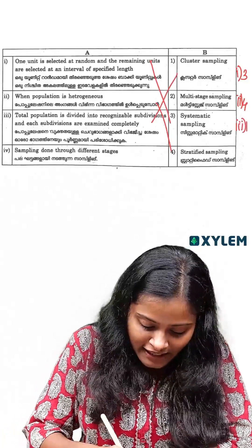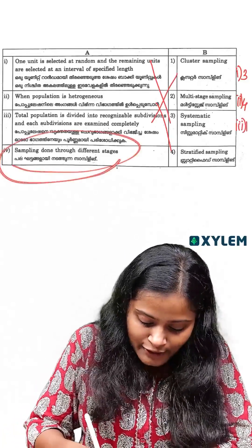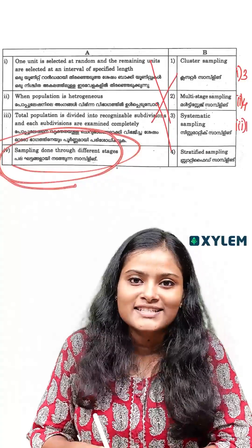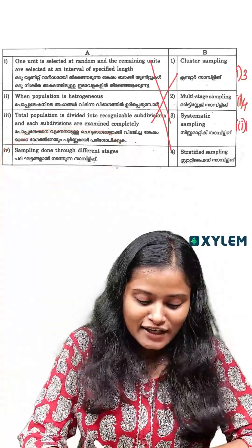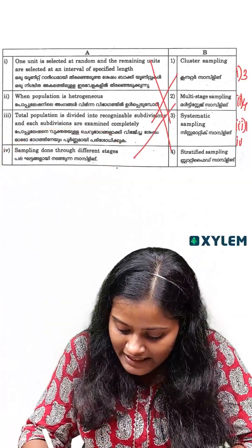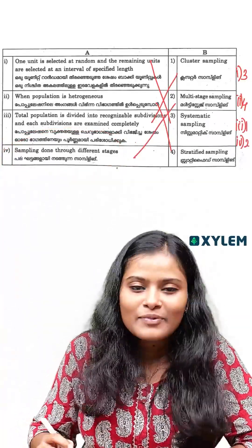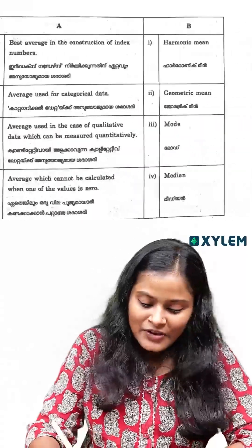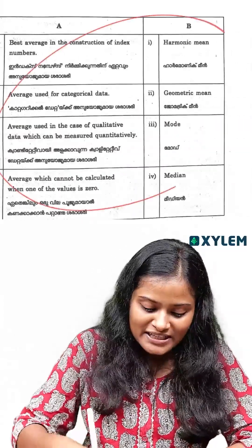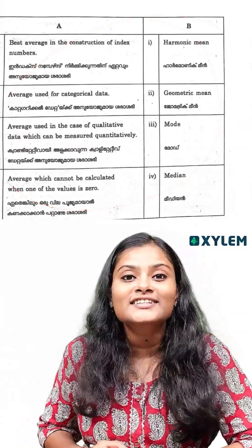Sampling is done through different stages — we are doing all stages. This is multi-stage sampling. Here we are talking about central tendency.